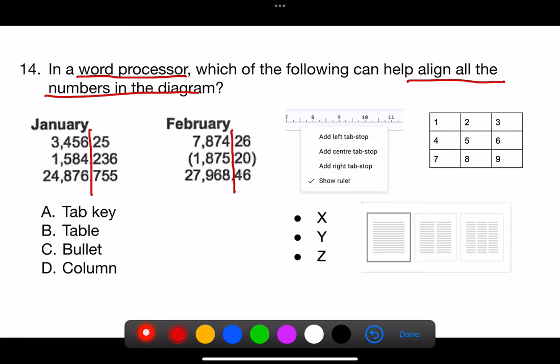The correct answer is A. Tab key. Word processors allow setting a decimal tab that aligns numbers at their decimal points, regardless of the digits before or after the decimal.